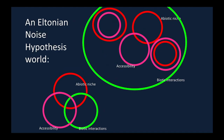Another possibility that a group of us pointed out in 2011 in a book we'll refer to in this course: sometimes biotic interactions may not be so important. The biotic circle may not be a very limiting constraint, and all of the action may be between the abiotic and accessibility. We'll come back to the Eltonian noise hypothesis — the idea that biotic interactions are not very important in limiting geographic-scale, not local-scale, distributions of species.